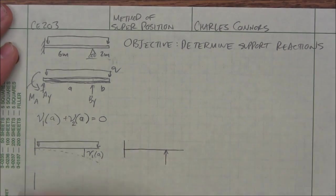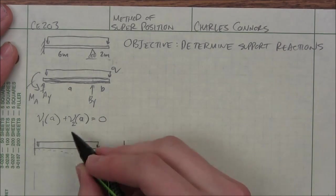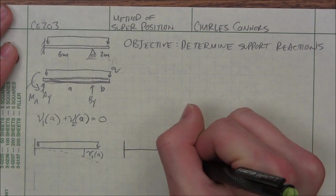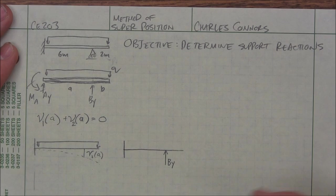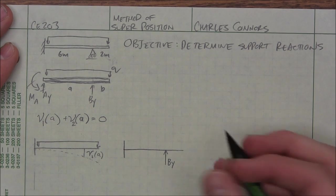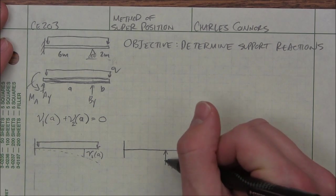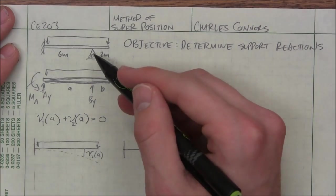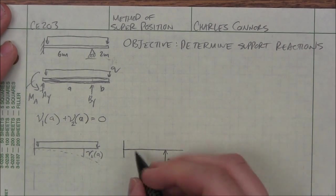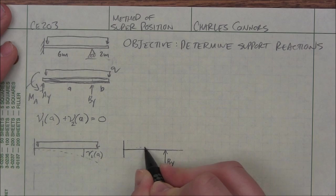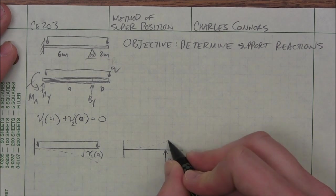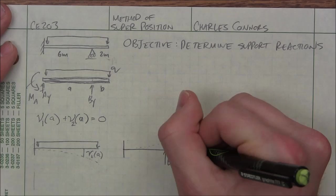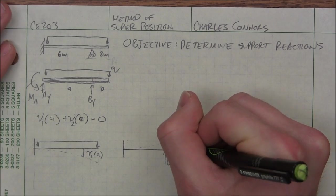This is our second loading, or our second deflection curve, and it is just some random, we don't know what BY is yet, but it is some random force that is replacing our pin and is pushing our beam up. So it's going to be curving and then it will go straight. But all we care about is the deflection right at this point.